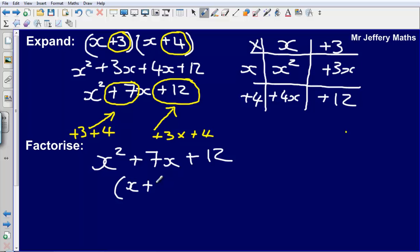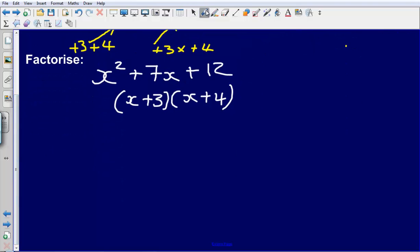It would factorise to x plus 3 and x plus 4. Let's take a look at a slightly different example and use this idea that we are looking for two numbers that will multiply to make the number on the end but add to make the number in the middle. So let's do that now.